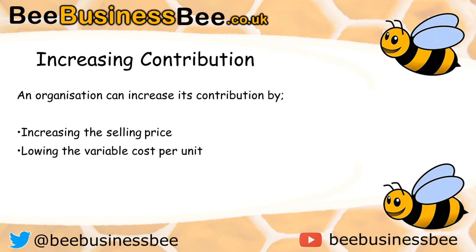You could be asked how the organisation could increase its contribution — effectively, how it could increase the profit made on each item sold. It could increase the selling price, though you've got to think about the knock-on effect of that and whether it's feasible. Or it could look to lower the variable cost per unit, though again you must consider what the knock-on effect of lowering variable costs would be. That is how you would tackle any question about increasing contribution.